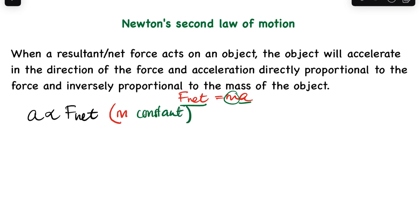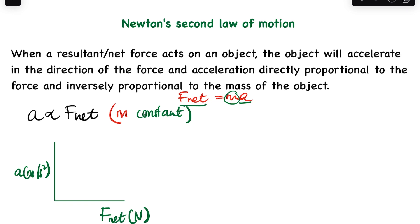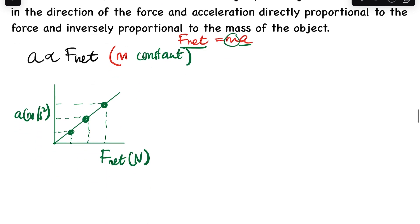So graphically, we plot acceleration on the y-axis against F-net on the x-axis. It is very important to label the axes. Something that is directly proportional gives a straight-line graph — zero force means zero acceleration. As the force increases, the acceleration increases, so the graph is a straight line passing through the origin. Acceleration is the dependent variable and F-net is the independent variable.